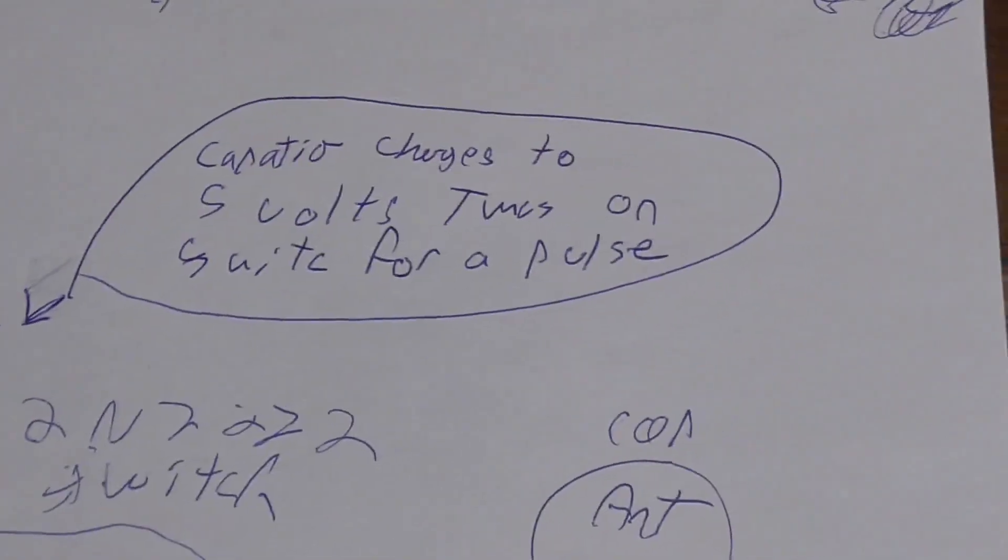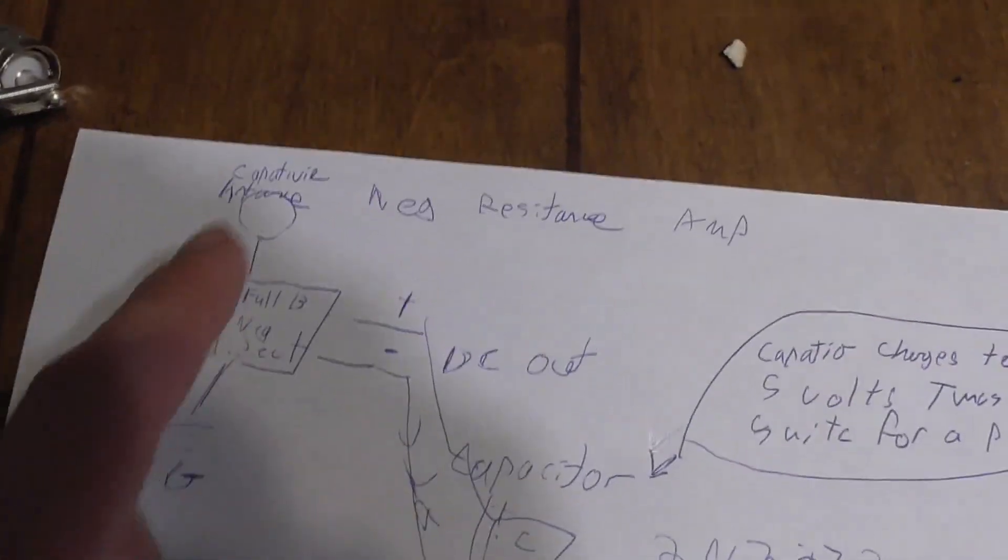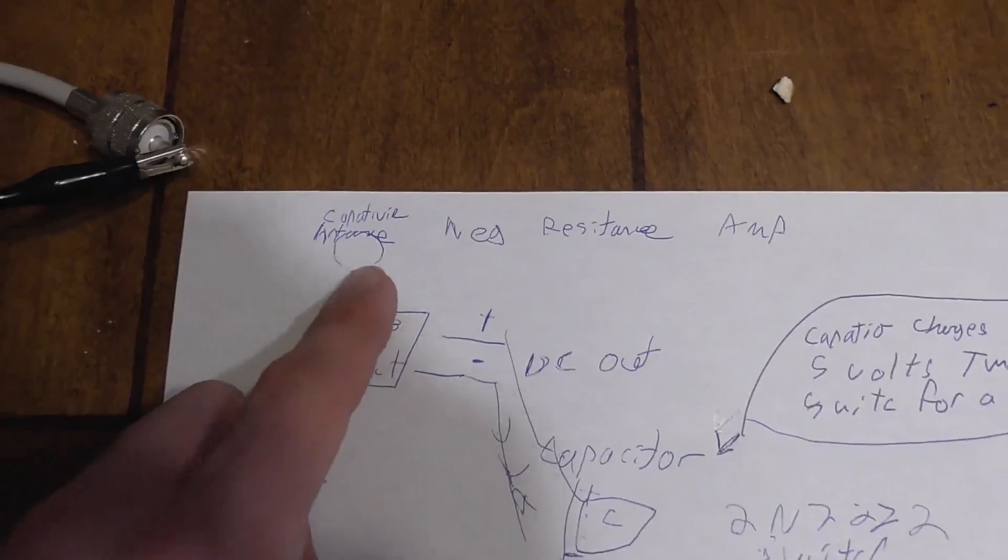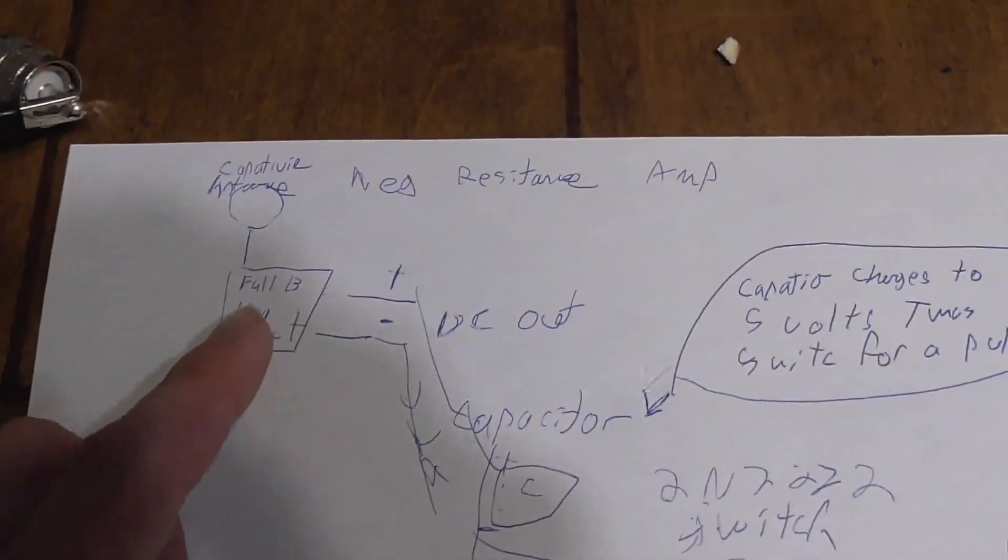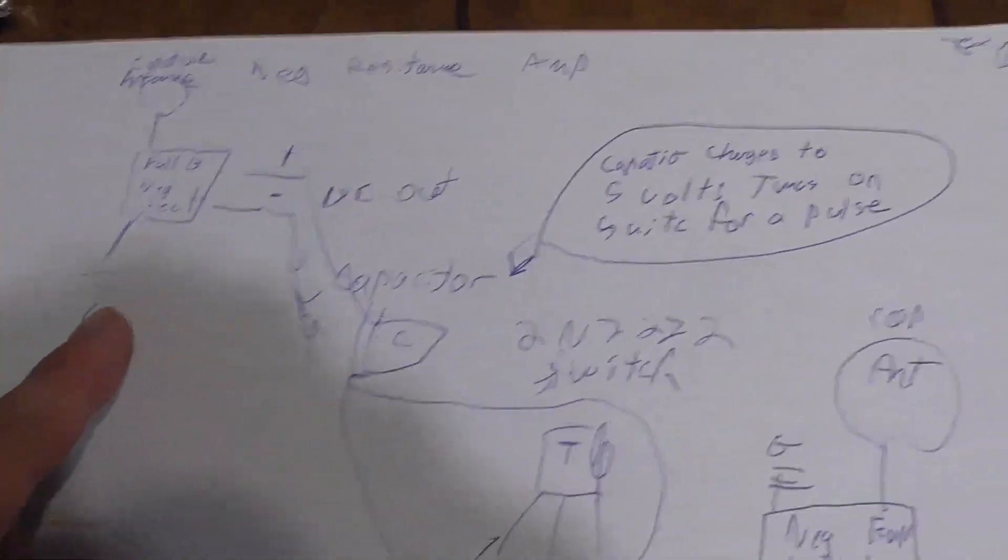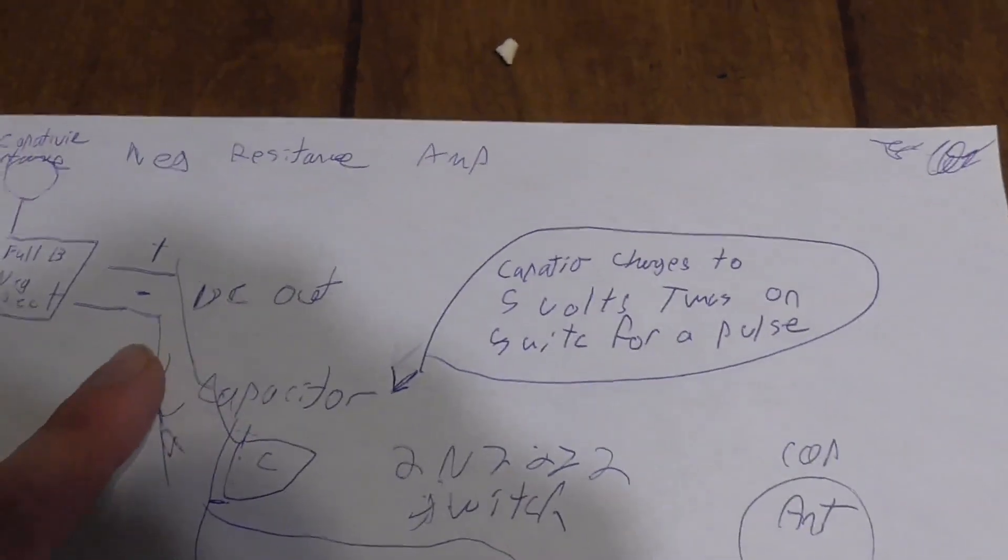I just made some notes here, you probably won't know. I'm not very good with schematics yet, so I'm just making little notes for myself. So basically what I'm trying to show here is, for my own use, there's the capacitive antenna going into the negative resistance full bridge rectifier here. There's my ground, giving me a DC out, quite high voltage.